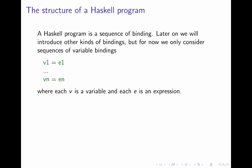A bit later in this part of the course I'm going to introduce other kinds of bindings, but for now we'll consider variable bindings and assume that a Haskell program is a sequence of variable bindings v1 equals e1 up to vn equals en. So there are n bindings here and each of these v's is a variable and each of the e's is an expression.